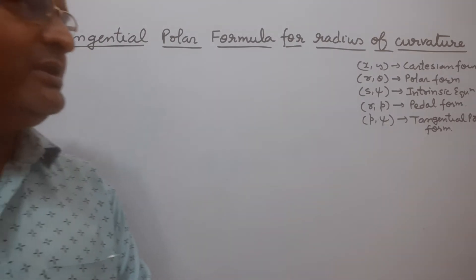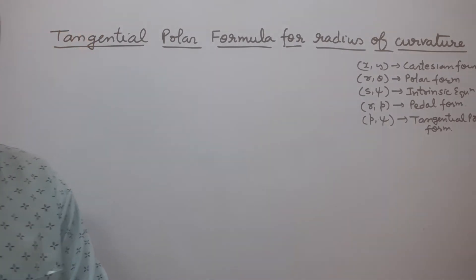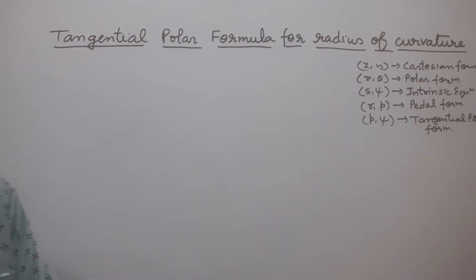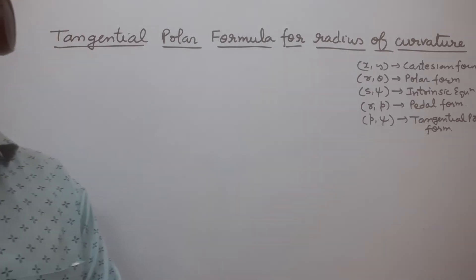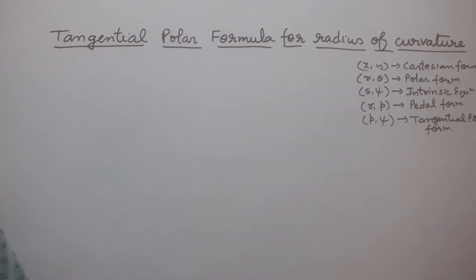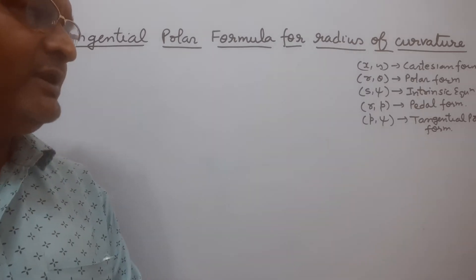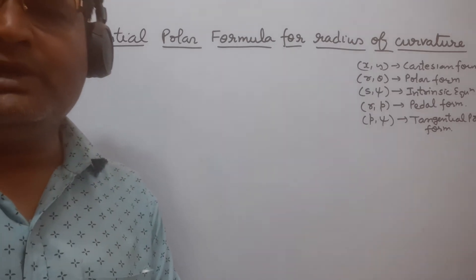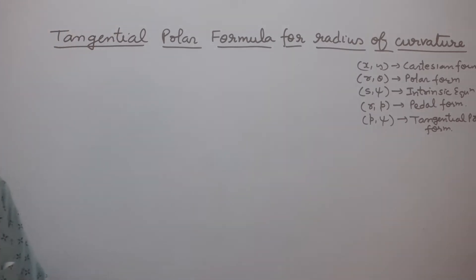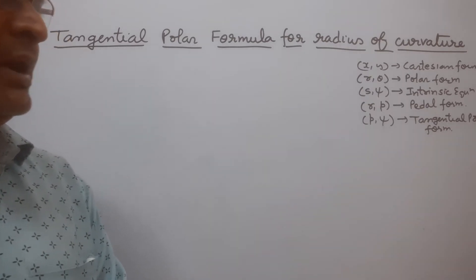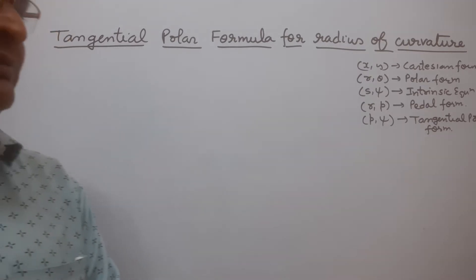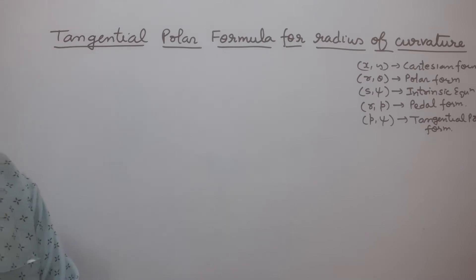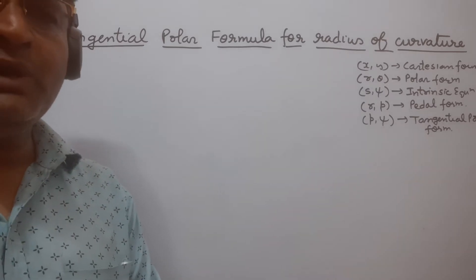If any equation represents in terms of R and Theta, this is called Polar form. If any equation represents in S and P, this is called Pedal. This is called Tangential Polar form, where P is the length of perpendicular drawn from the pole on the tangent. If any equation represents in terms of P and Psi, this is called Tangential Polar form, where P is the length of perpendicular drawn from the pole on the tangent.